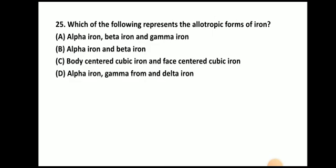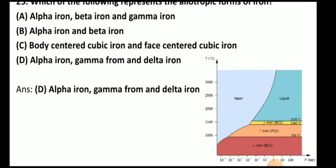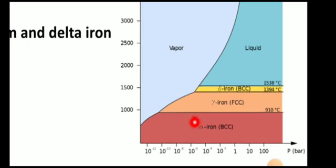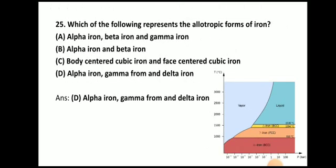The last question: Which of the following represents the allotropic forms of iron? The answer is alpha iron, gamma iron, and delta iron. Here you can see all the allotropes of iron: alpha iron which is BCC in structure, then gamma iron which is FCC in structure, and then delta iron which is again BCC in structure.